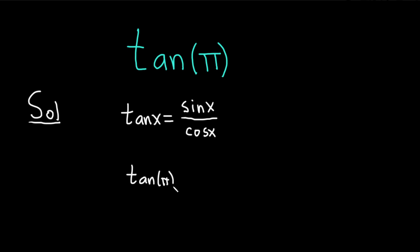The sine of pi is 0 and the cosine of pi is negative 1. So you get 0 over negative 1, so you get 0.